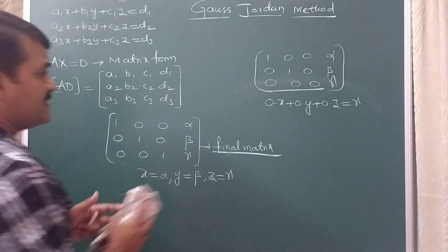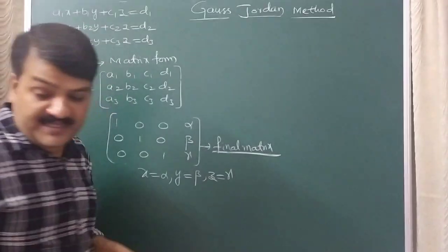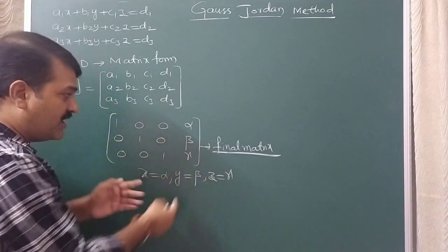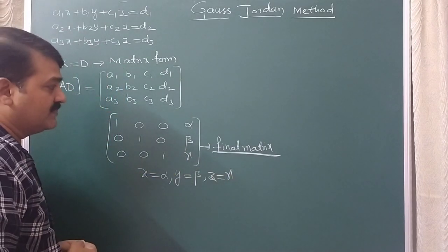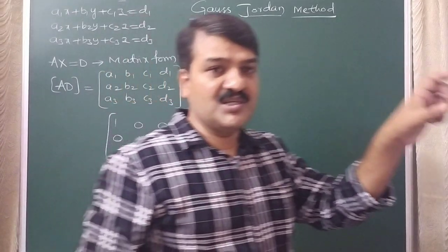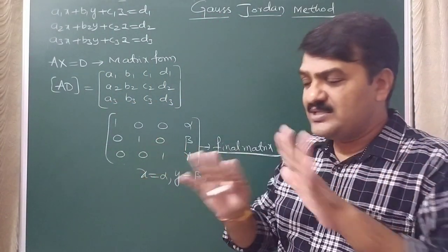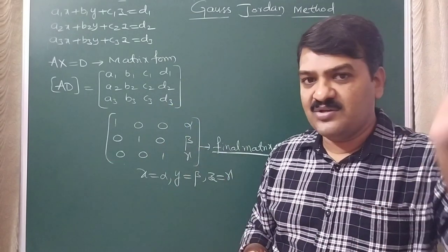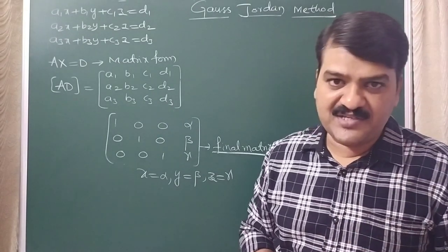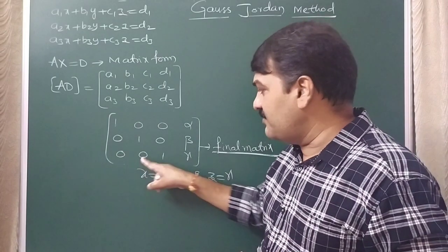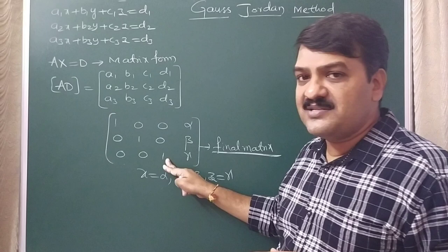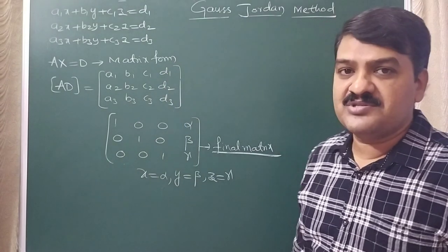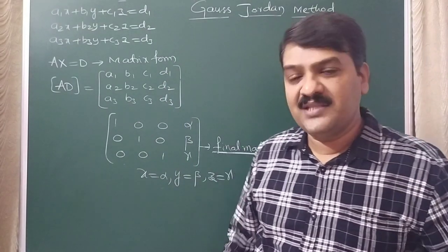To summarize: when transforming the augmented matrix, if you successfully reach the final echelon form, write the unique solution from the last column. If in the process you get all zeros in a row, the system has infinite solutions — stop and write infinite solutions. If you get the first three elements zero with the last element non-zero in a row, stop and write that the system has no solution.